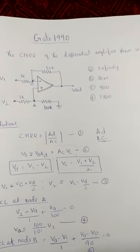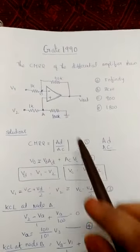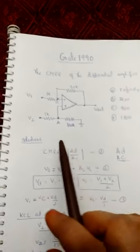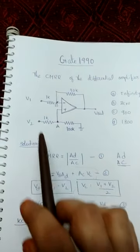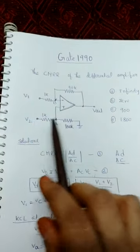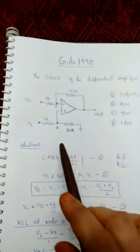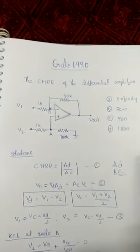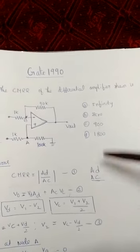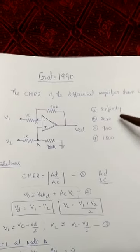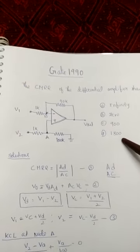The common mode rejection ratio of a differential amplifier as shown in the figure. This is the operational amplifier with two inputs: the inverting input V1 and the non-inverting input V2. The operational amplifier is connected in a feedback loop with different resistors. From the given problem, find out the CMRR. There are four options: A is infinity, B is 0, C is 900, and D is 1800.